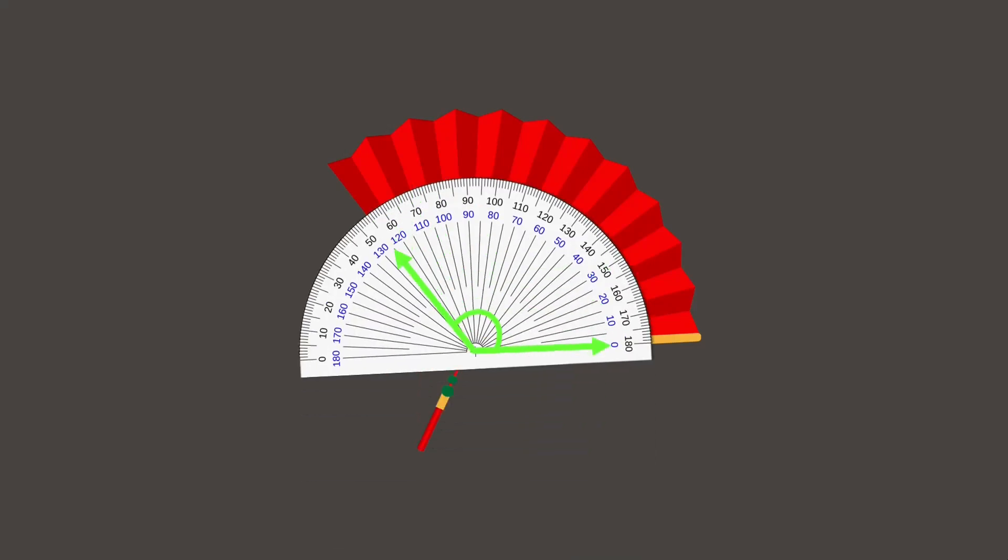Next, let's measure the angle of this object. Again, make sure that the vertex is at the center point of the protractor. There you go. And one arm must be pointed at 0 degrees.